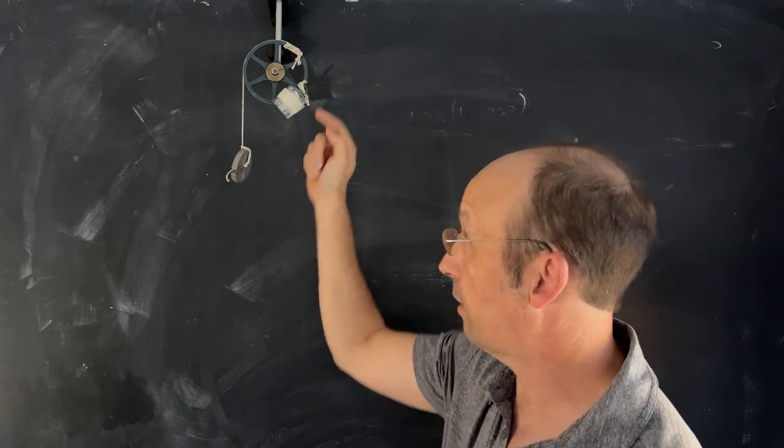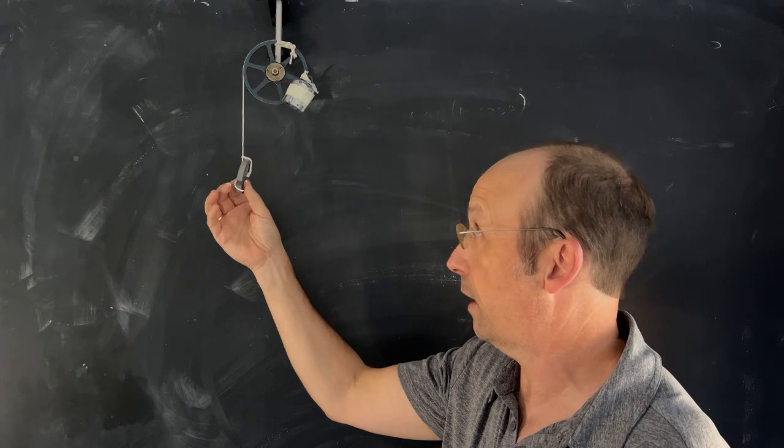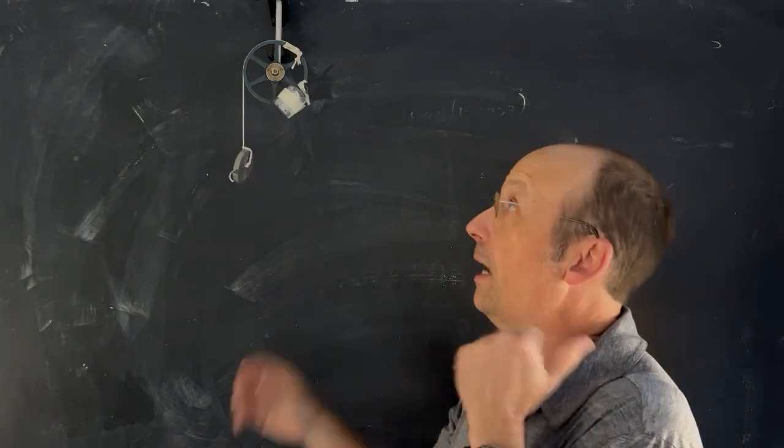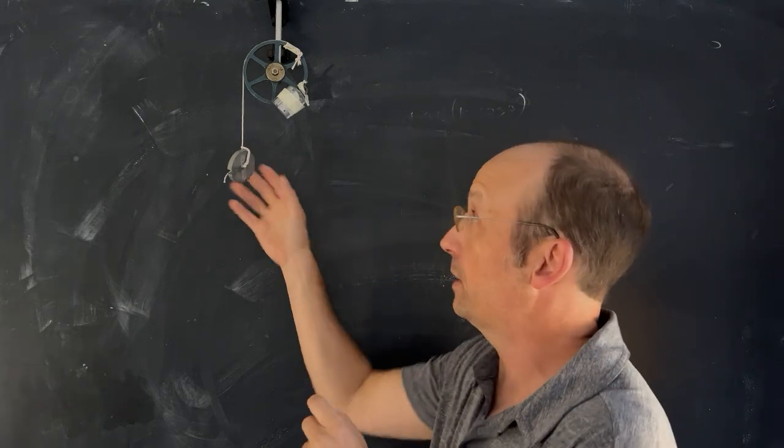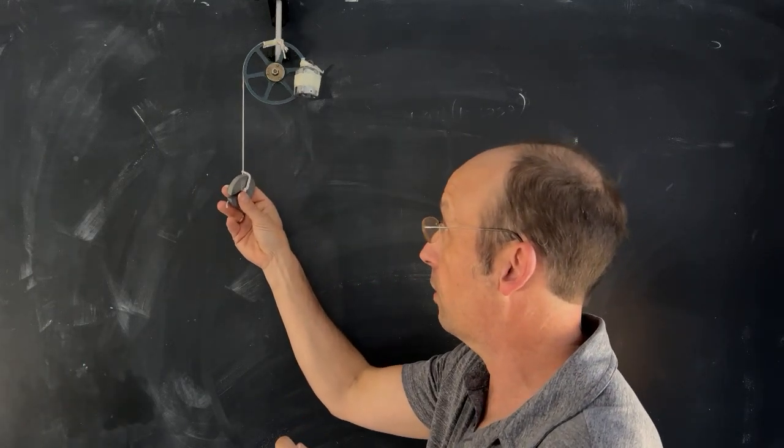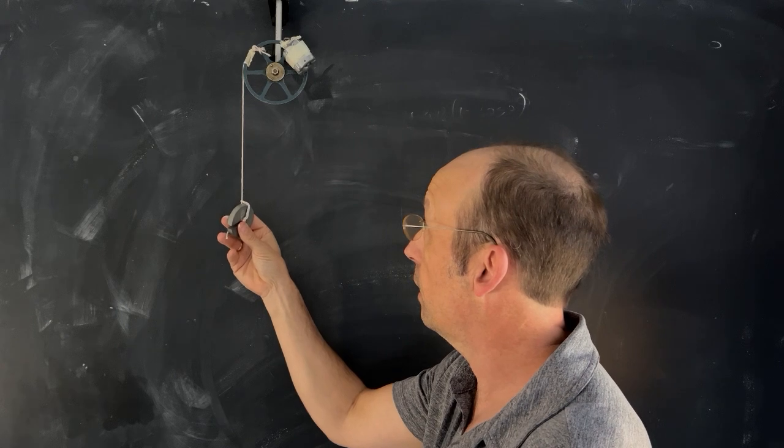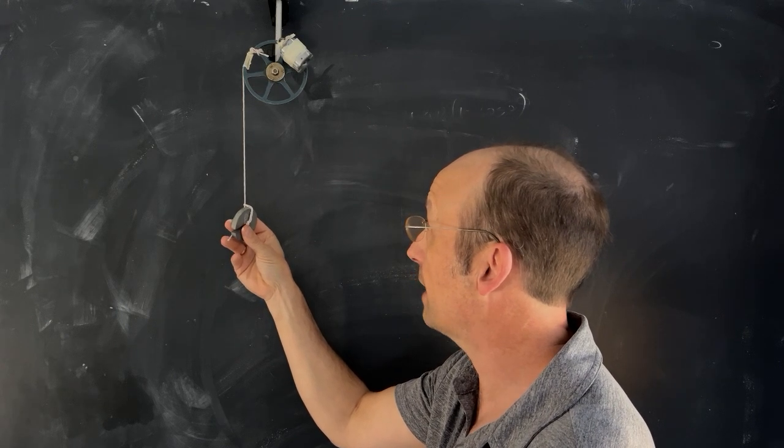And you can see right there that it's obviously in a stable position, right, if I displace it. Now there is another stable position, let's see if I can get there, up here where the torque is equal. See that mass is rolling a little bit.